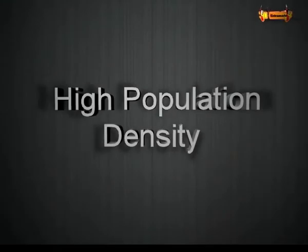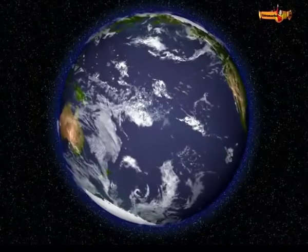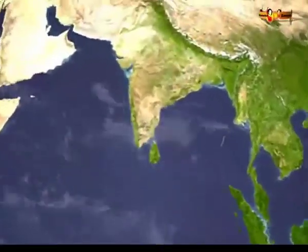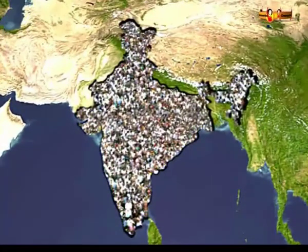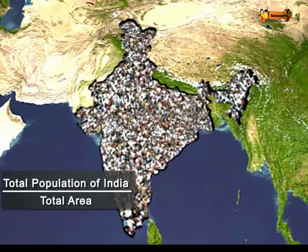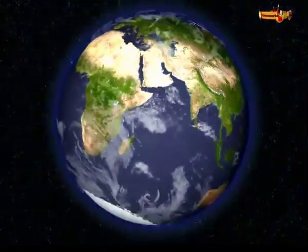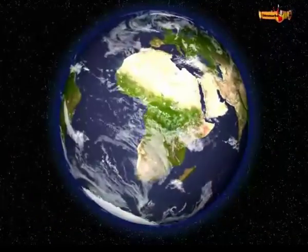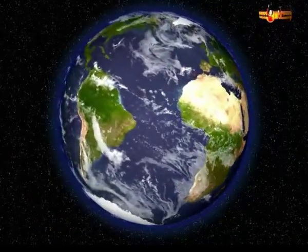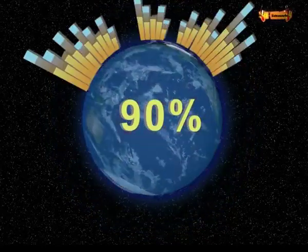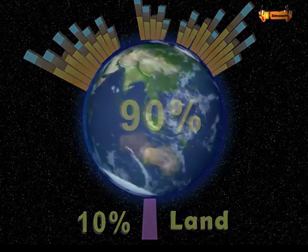Population density is a measurement of population per unit area or unit volume. It is commonly represented as people per square mile or square kilometer, and can be computed for cities, states, entire continents, and even the world. About 90% of the Earth's people live on just 10% of the land.